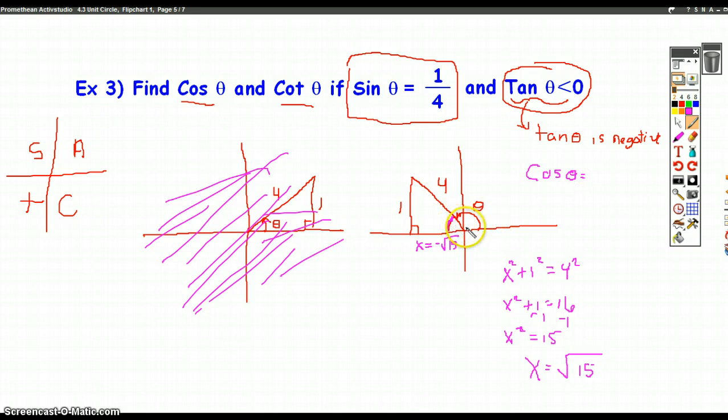Now we're ready to answer the question. Cosine of theta, using our reference angle, is adjacent over hypotenuse: negative root 15 divided by 4. And the cotangent is opposite over adjacent—I'm sorry, that's tangent. Tangent is opposite over adjacent. Cotangent is the reciprocal, so it's negative root 15 over 1. And those are our answers.